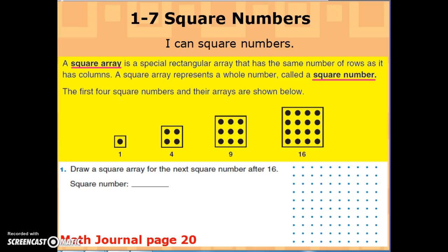A square array represents a whole number called a square number. So let's take a look at the first four square numbers and their arrays. The first one is one, and for this it's just one dot—it's one row with one in each row.